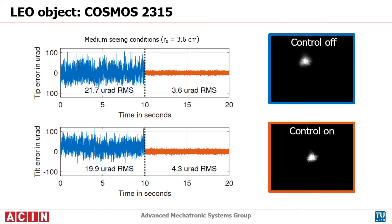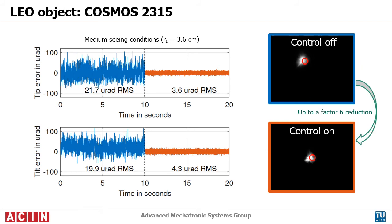If tip-tilt compensation is enabled, the remaining RMS error is reduced by up to a factor of 6, which is also clearly visible in the second video with the orange frame.